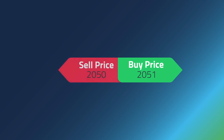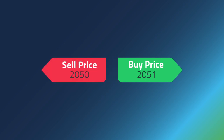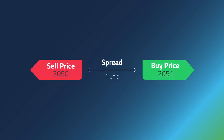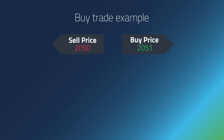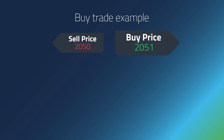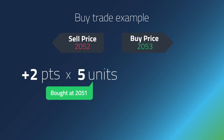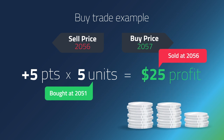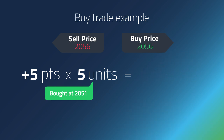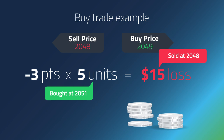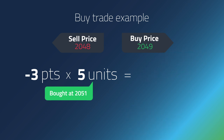Each product has a buy and a sell price. The difference between the two is called the spread. Your profit or loss is based on the difference between the price you entered at and the price you exit at. The more points the market moves in your chosen direction, the more profit you make. The difference multiplied by the units equals your profit. If the markets move in the opposite direction, you will make a loss. Depending on the currency or product quoted in, currency conversions may apply.